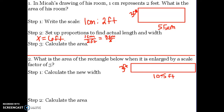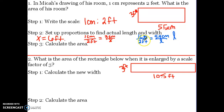Now we do the same thing for the length. My scale is one centimeter to two feet, and the length is five and a half centimeters, and we're looking for the length. One times l — you can use whatever variable, it doesn't matter — one times l is just l. And two times five and a half is eleven.